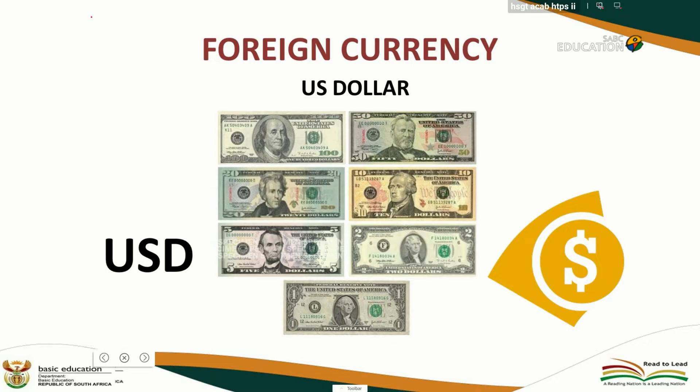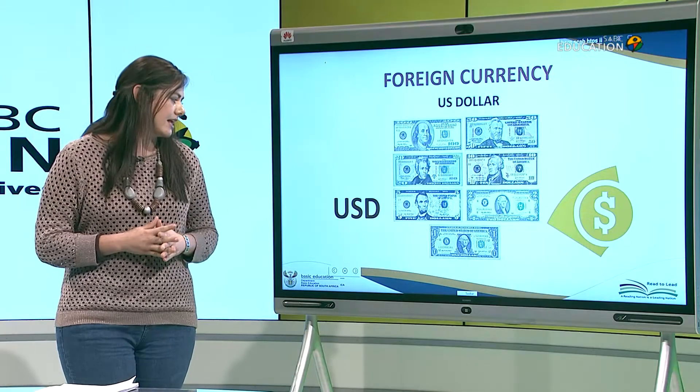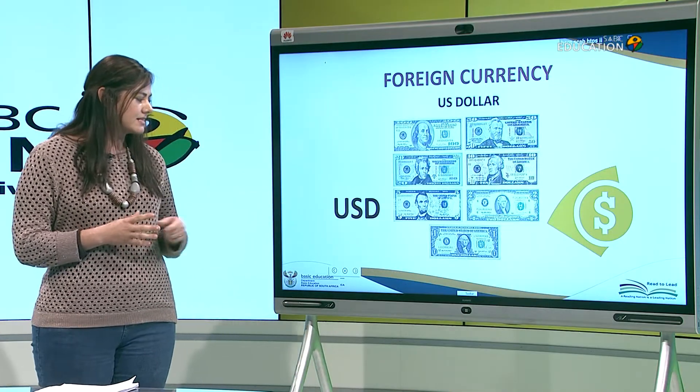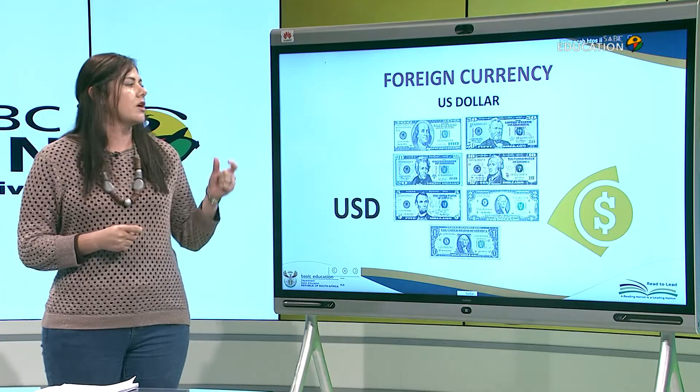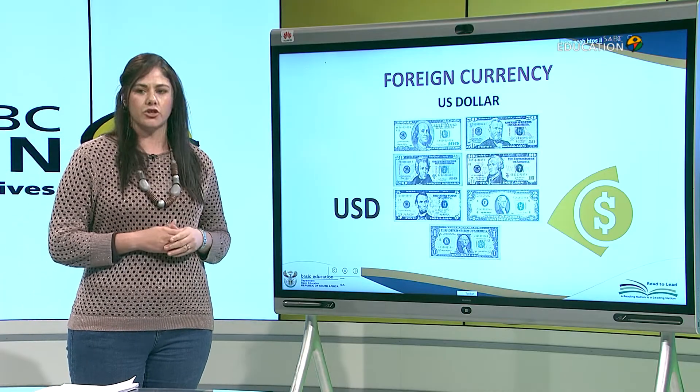How do you remember the currency code and symbol? Looking at the US: USD stands for United States, and the S is in the symbol with a line through it. USD is the abbreviation for US dollar.